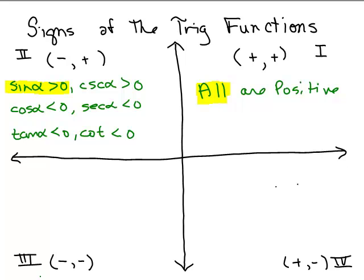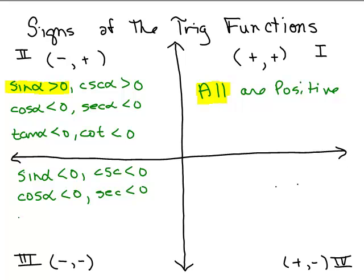Let's do the same thing in quadrant 3. The sine is a negative number over R because the Y is negative here, so the sine is negative and the cosecant will also be negative. The cosine: X is negative — negative over R is negative over positive, which is also negative. So the secant, its reciprocal, will also be negative. The tangent is Y over X: a negative over a negative is positive. So its reciprocal will also be positive.